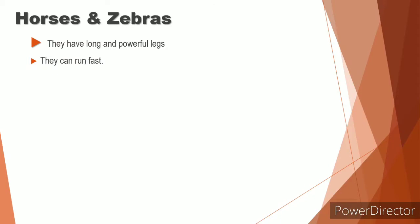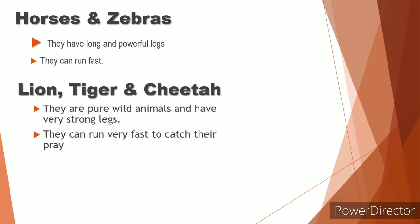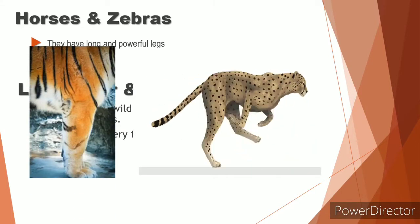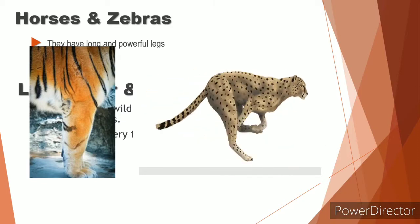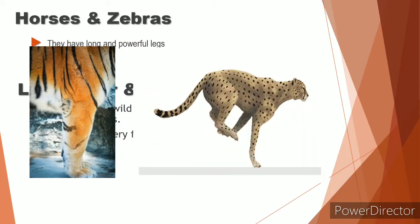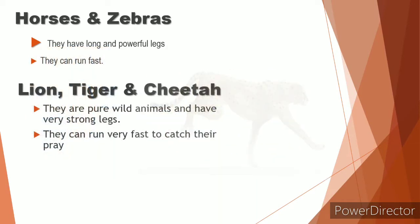Next one is lion, tiger, cheetah. They are pure and wild animals. They can run very fast to catch their prey and make it their food. Look at the leg of a tiger. And look at the cheetah. How is it running to catch its prey? Isn't it beautiful?